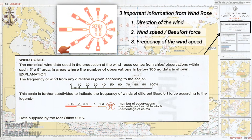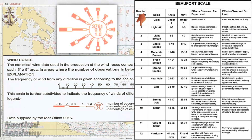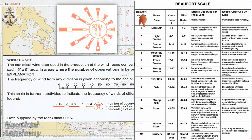Each spoke is subdivided into several segments, which indicate the frequency of winds at different Beaufort forces. Before interpreting the spoke itself, let's first understand how to read the Beaufort force using the legend provided on every routing chart. The numbers in the legend, from 1 to 12, represent the Beaufort scale, which describes wind strength from light air to hurricane force winds.